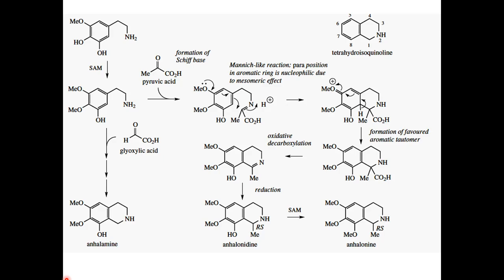The difference between these compounds is the aldehyde or carbonyl compound which reacts with the phenylethylamine base. In one case we have pyruvic acid; in another case we have glyoxylic acid. A difference may also exist between closely related compounds — for example, anhalamine has an additional methoxyl group at a specific position. This describes the involvement of the Mannich reaction in the biosynthesis of alkaloids.